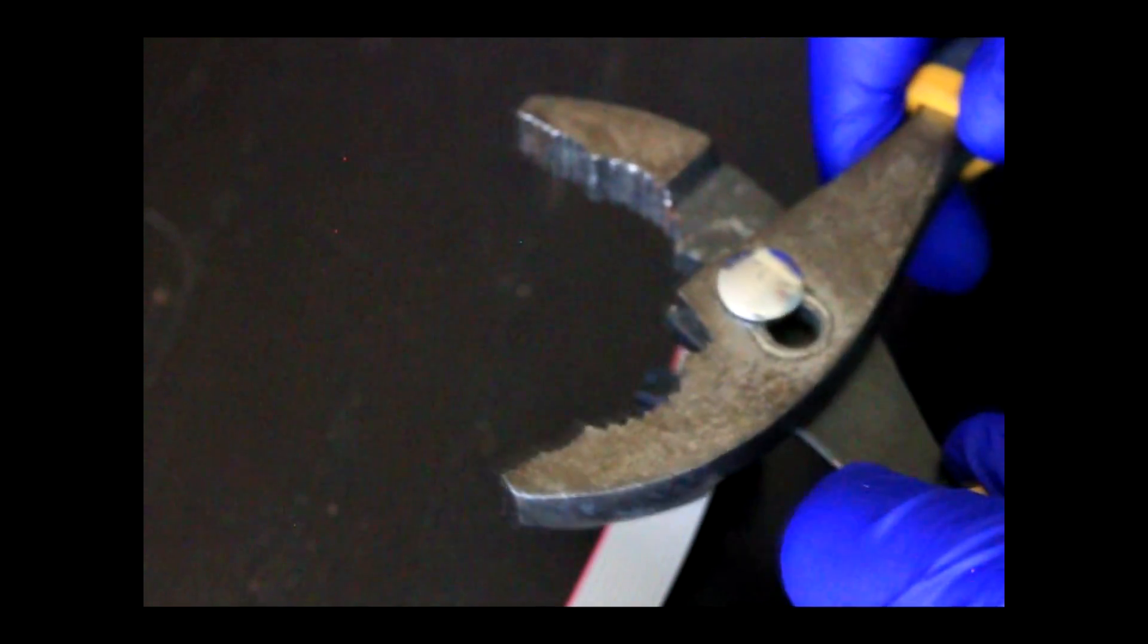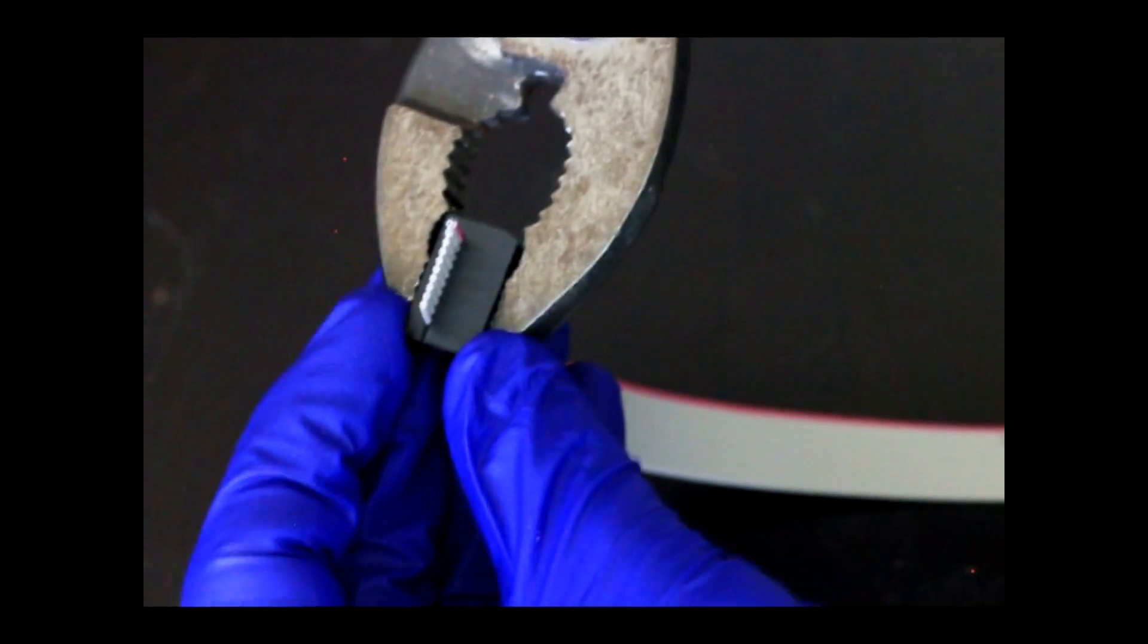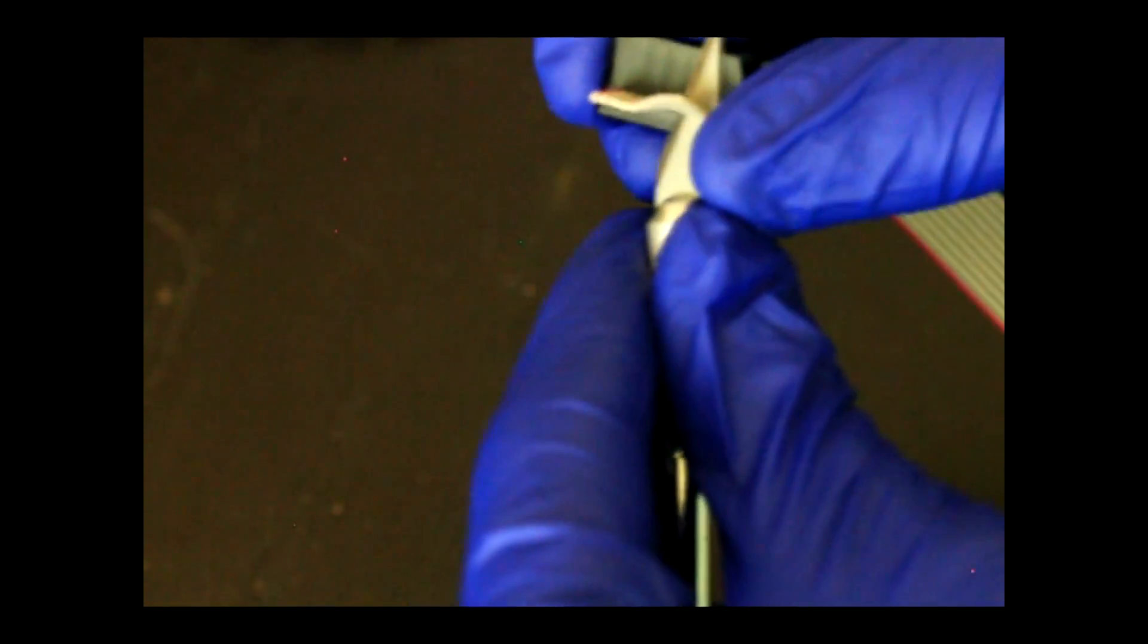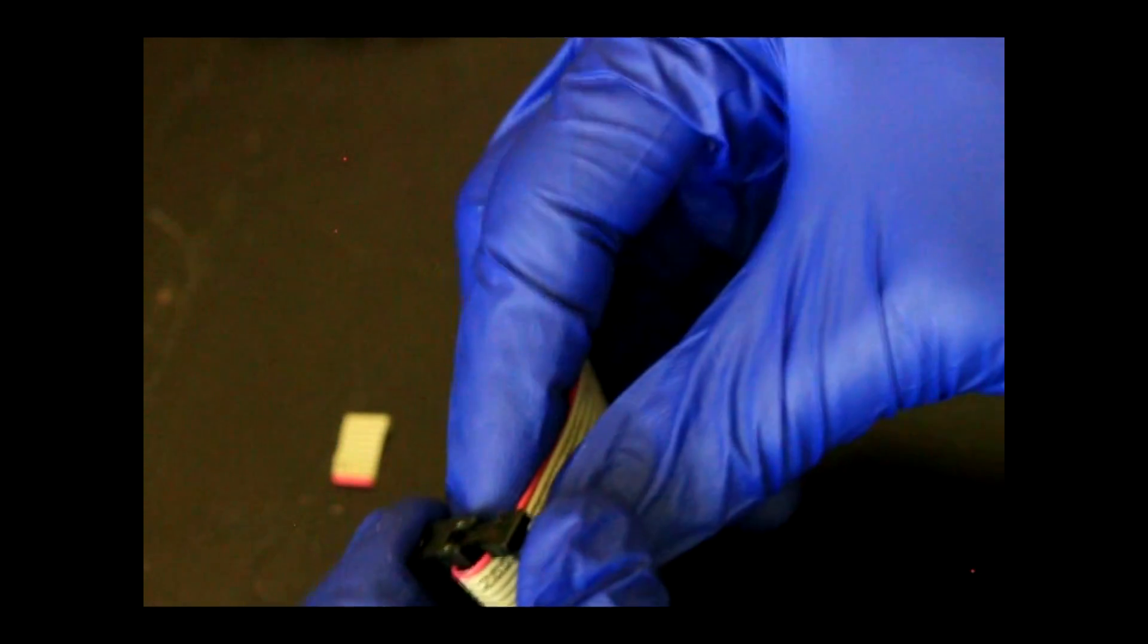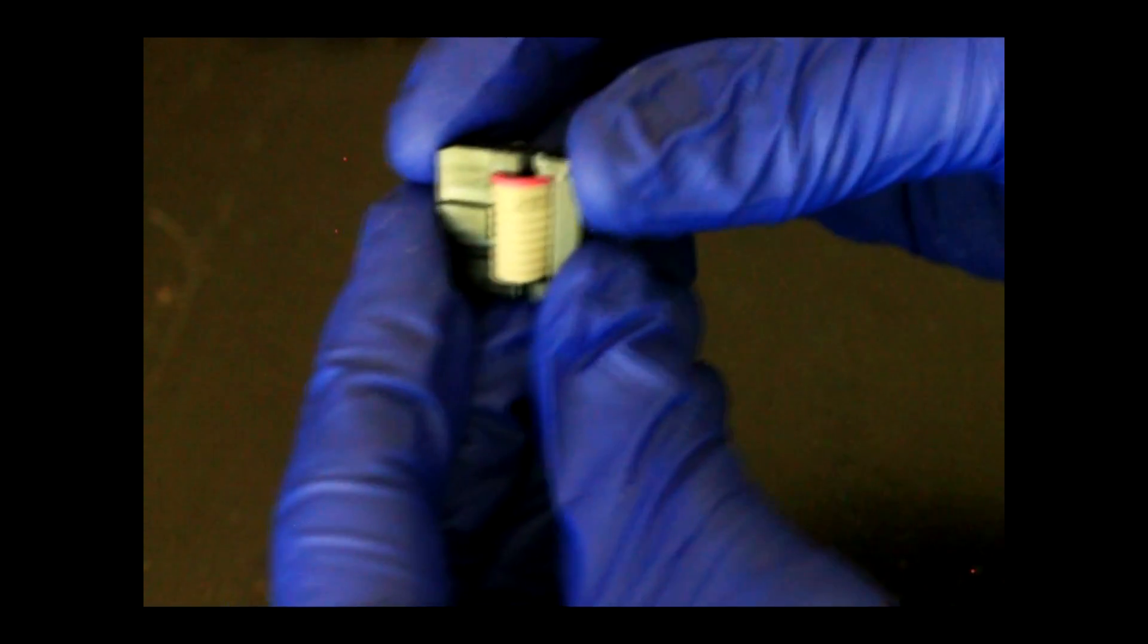Using standard pliers, open it to the wide position. Squeeze the assembly together so that the clamping piece clicks into place. Remove the excess ribbon using an exacto knife or scissors. Fold the ribbon cable around the top so it can add some strain relief. And then add the strain relief back onto the top of the clamp and push this piece in until it clicks in place.